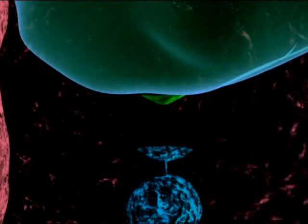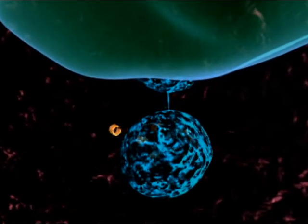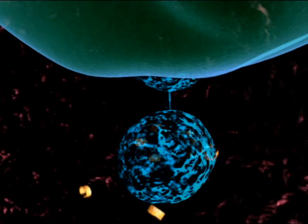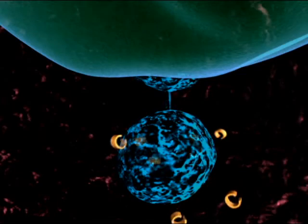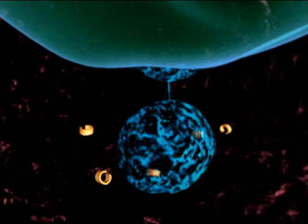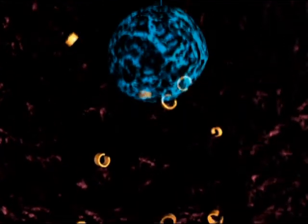T cells that come in contact with macrophages or dendritic cells become active, and the T cells then send out signals called cytokines. These cytokines are absorbed by B cells, activating them in turn.